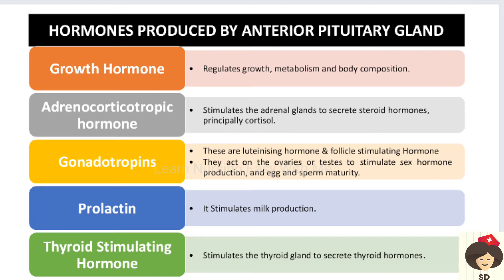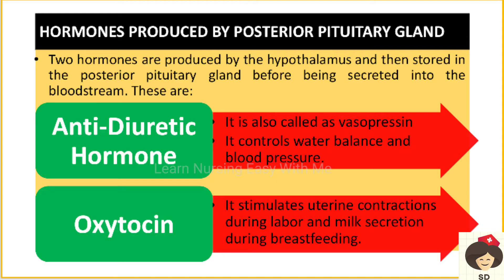Prolactin helps in milk production after birth. Thyroid stimulating hormone stimulates the thyroid gland to secrete thyroid hormones, which are responsible for maintaining the basal metabolism of the body.